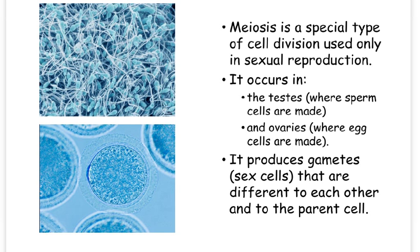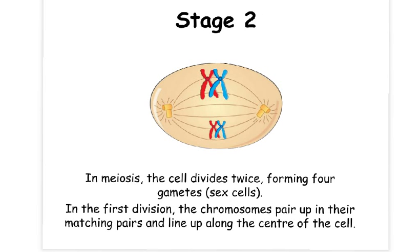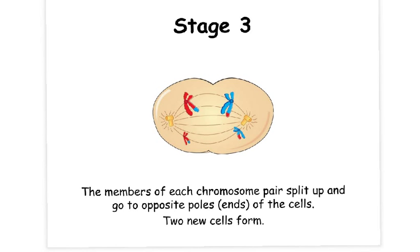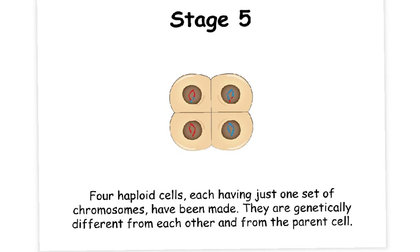Just like mitosis, meiosis involves several stages. Like mitosis, copies of the genetic information are made so that each chromosome is doubled up. During meiosis, there are two cell divisions. During the first division, the chromosomes line up along the centre of the cell, and one member from each pair of chromosomes moves to opposite poles of the cell. The cell then immediately divides in two. As soon as this first division has taken place, the doubled-up chromosomes split and go to opposite poles of the two new cells. The cell then divides again, resulting in four haploid cells, each having just one set of 23 chromosomes.